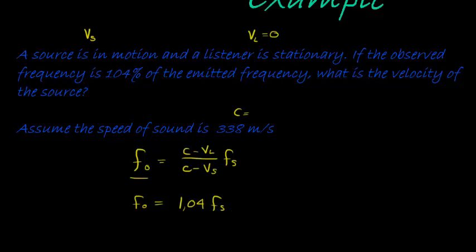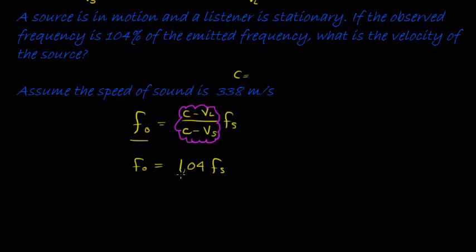So what I hope you can see here is that this part is the percentage. It tells me what percent of the observed frequency do we have. And we have 1.04. In other words, c minus vL over c minus vS is equal to 1.04.